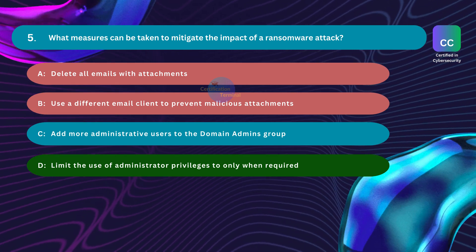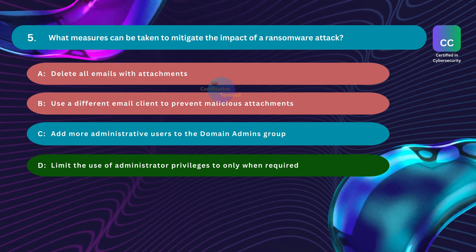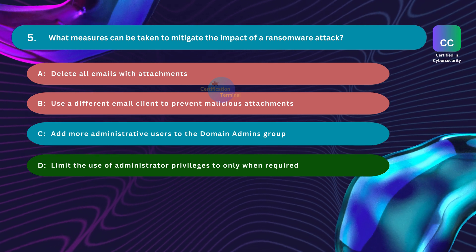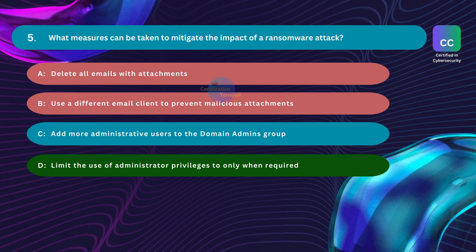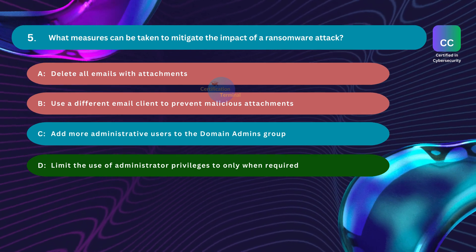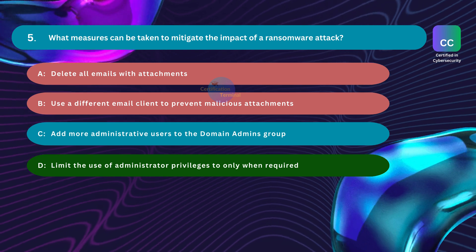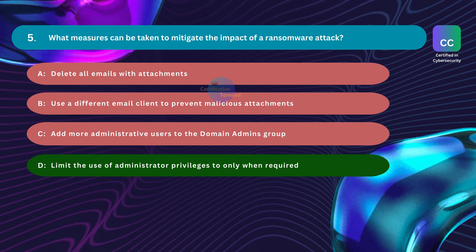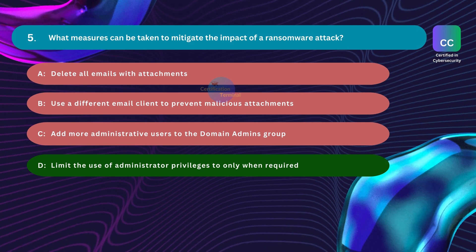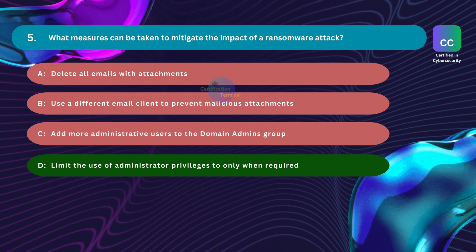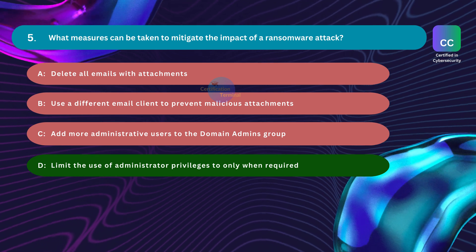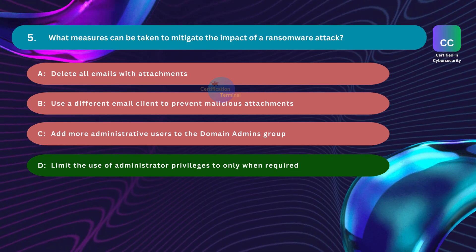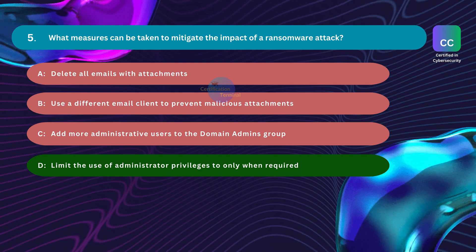Option A, delete all emails with attachments, is incorrect — it is a reactive measure and does not address the root cause or prevent the spread of ransomware, which can be distributed through various vectors. Option B, use a different email client, is incorrect — it is not a comprehensive solution, as attackers use various methods to deliver malicious content. Option C, add more administrative users to the domain admins group, is incorrect — this increases the attack surface and can escalate the severity of a ransomware attack by providing more targets with elevated privileges.